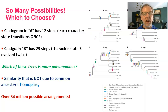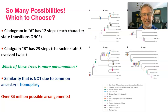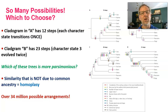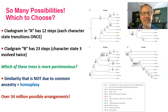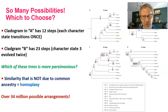So how do we decide which of these diagrams is the most likely one — which hypothesis we're going to accept for the relationships? We use the principle of parsimony. We ask which of these trees is the most parsimonious. The principle of parsimony says that the simplest hypothesis is the most likely hypothesis.